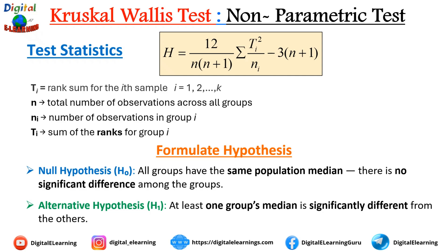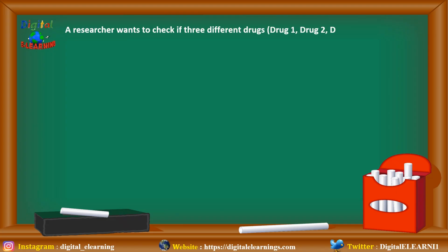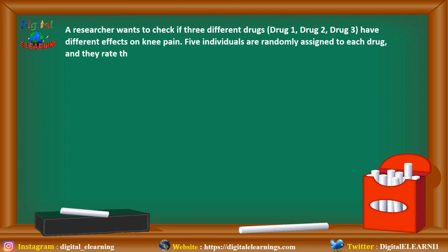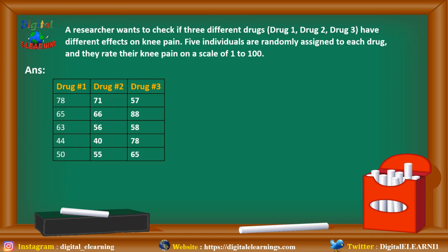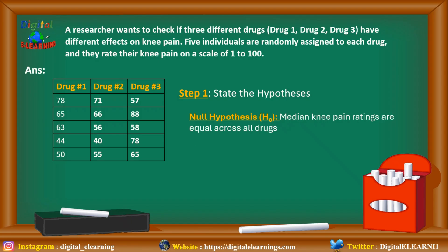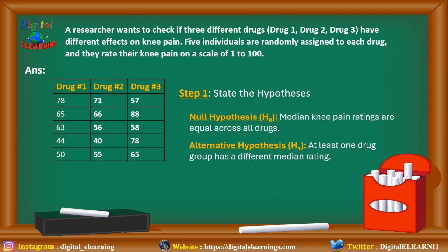Let us test this with a real example. A researcher wants to check if three different drugs — Drug 1, Drug 2, and Drug 3 — have different effects on knee pain. Five individuals are randomly assigned to each drug and rate their knee pain on a scale of 1 to 100. Step 1: state the hypothesis. Null hypothesis: median knee pain ratings are equal across all drugs. Alternate: at least one drug group has a different median rating.